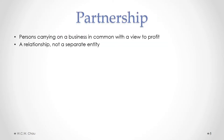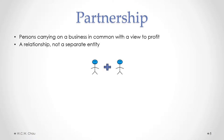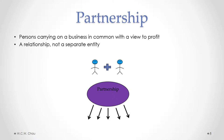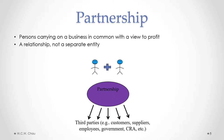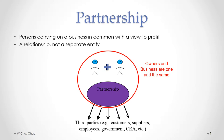A partnership is considered to be one or more persons carrying on a business in common with a view to profit. Legally speaking, it is considered to be a relationship and not a separate legal entity. The two partners get together to carry on a business — that is called a partnership. The partnership has dealings with outside third parties such as customers, suppliers, employees, government, and CRA. The key legal aspect of a partnership, just like with the sole proprietorship, is that the owners and the business are considered to be one and the same legally. So if the partnership owes money to someone, the partners themselves also personally owe that money.